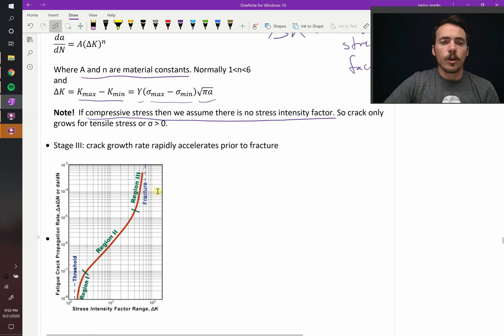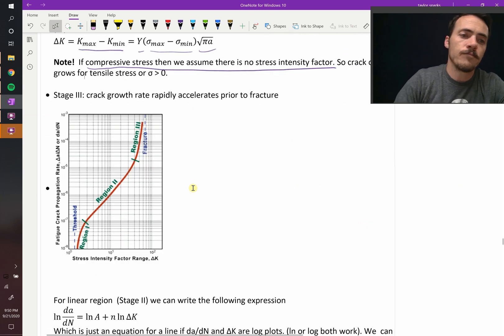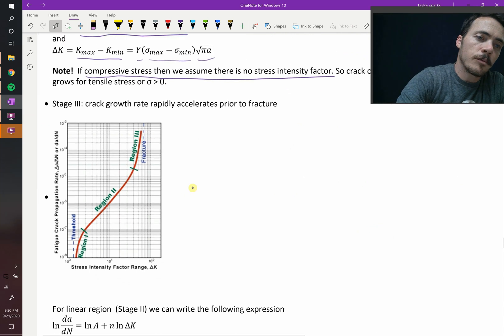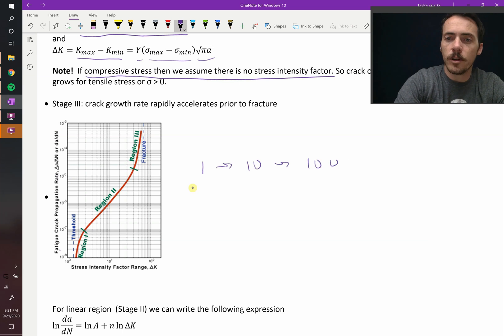So, you've got crack growth, and then you end up with three stages of crack growth. Fatigue crack propagation rate. Now, you'll notice that we're plotting this on a log scale. What is a log scale? A log scale means that you start counting by tens, by factors of tens. So, you go from one, and then it becomes ten, and then it becomes one hundred, and then it becomes one thousand, and so forth.